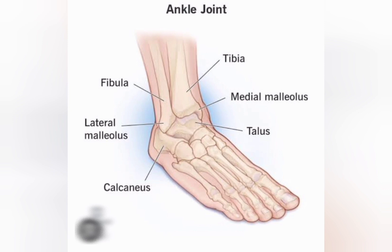Next, malleolus is a bone projection having the shape of a hammer head. You can see that the tibia end has a medial malleolus present, while the fibula end has a lateral malleolus present.